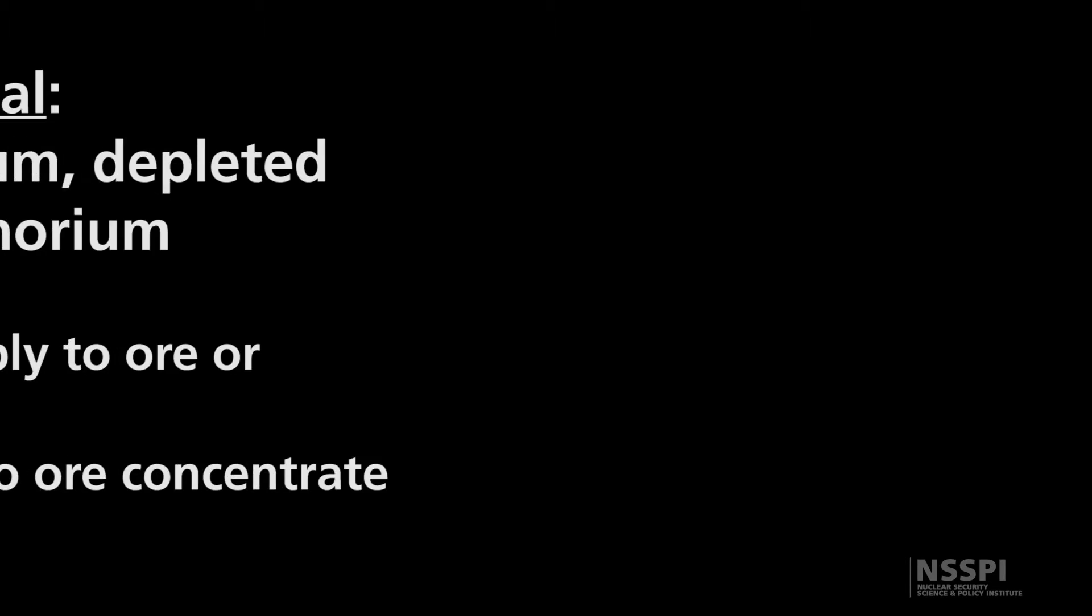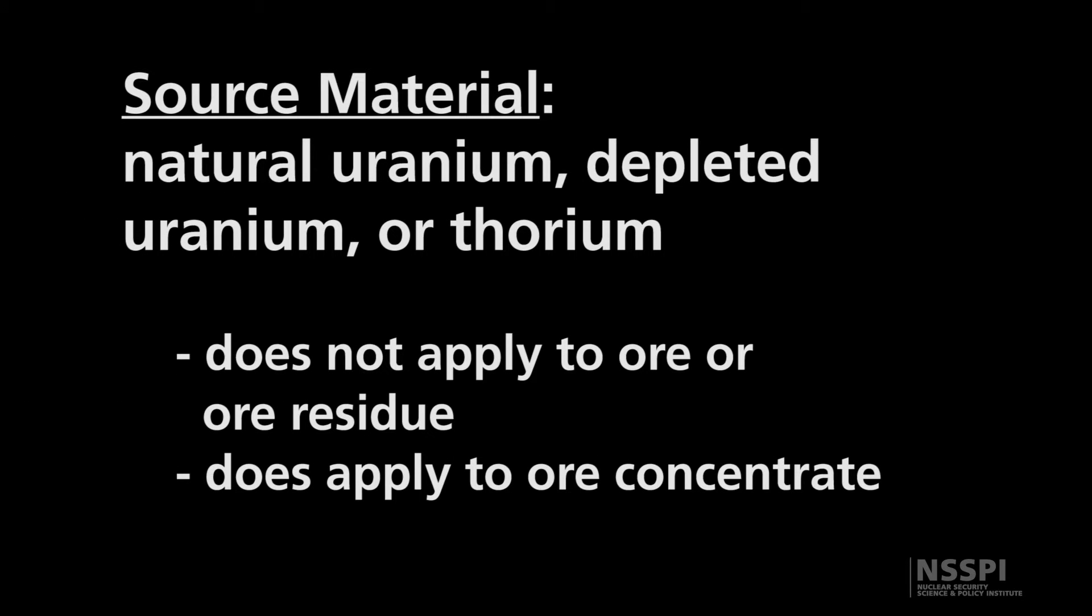What is source material? That includes natural uranium, depleted uranium, or thorium, which are materials that we might find in Mother Nature in the case of natural uranium and thorium, or depleted uranium. All these are materials that we could use as a source material at the front end of the fuel cycle.